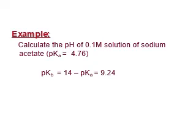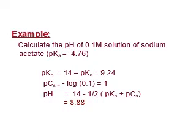Using the calculator, pKb is equal to 9.24. I also want to calculate the pCs. pCs equals minus log of the molar concentration of the salt. The concentration given is 0.1 molar, so pCs equals minus log 0.1, which equals 1.